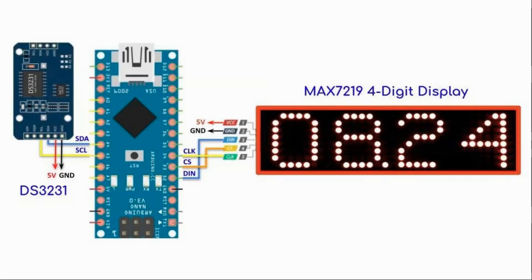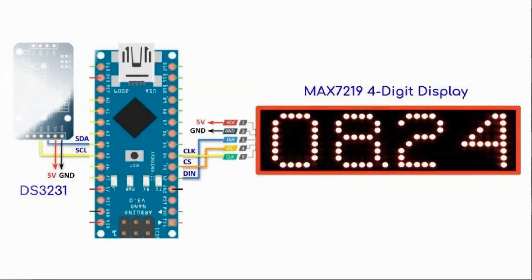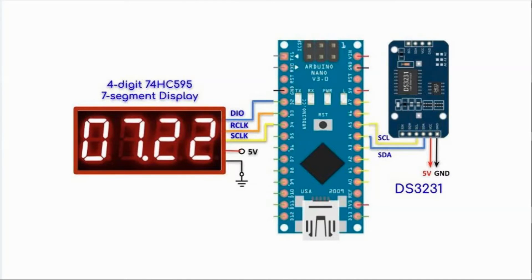In this video, two real-time clock systems are presented. One uses the MAX7219 four-digit display which shows time, date, and temperature coming from a DS3231 module. The second real-time clock is based on the four-digit 74HC595 seven-segment display where time, date, and temperature are also displayed coming from the DS3231.